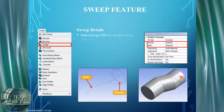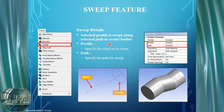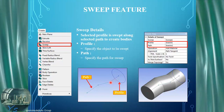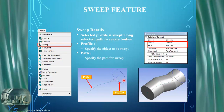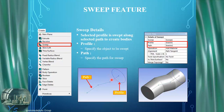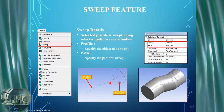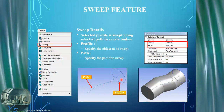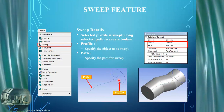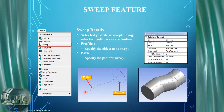The sweep feature is the next item down the list, the third item, and allows us to define two sketches. The first sketch being the profile sketch or the base object for the sweep, and the second sketch being the path along which the first sketch is pulled in order to create the 3D body.